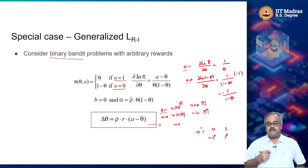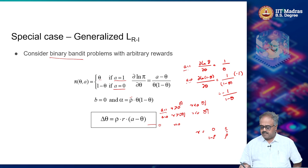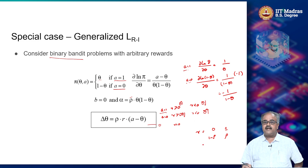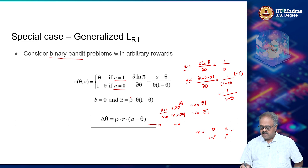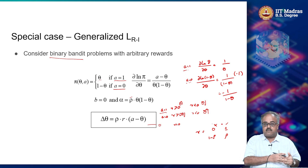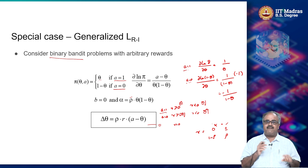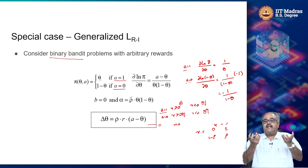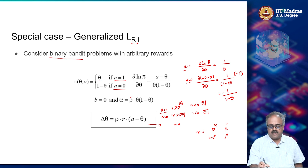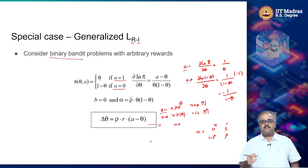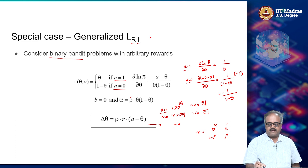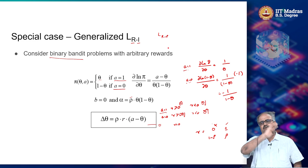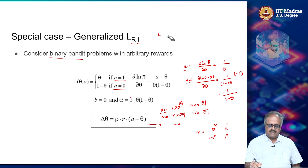With a binomial reward bandit, whenever I get reward 0 (a penalty) I do not change anything, but whenever I get reward 1 I increase the probability of that action. This is called 'reward and inaction' — when a penalty comes, do nothing; when a reward comes, react. This is part of a whole class of bandit algorithms (like L_R_P) that keep probabilities directly, increasing them on positive reward and leaving or decreasing them on no reward.